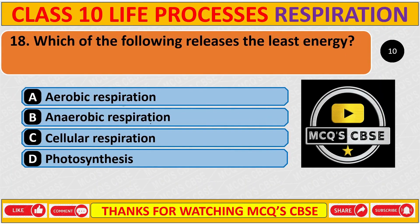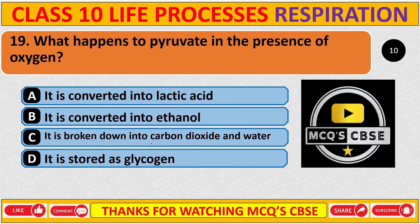Question 18: Which of the following releases the least energy? Correct answer is B: Anaerobic respiration. Question 19: What happens to pyruvate in the presence of oxygen? Correct answer is C: It is broken down into carbon dioxide and water.